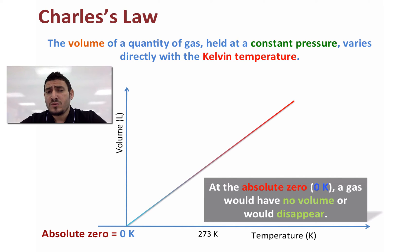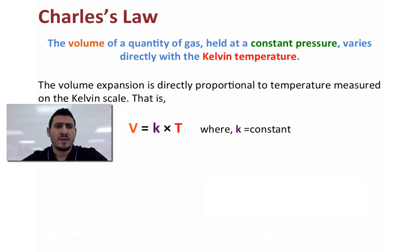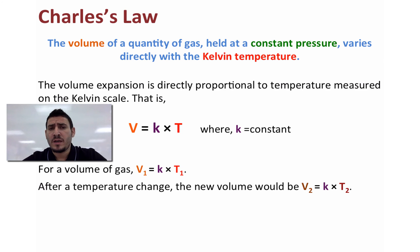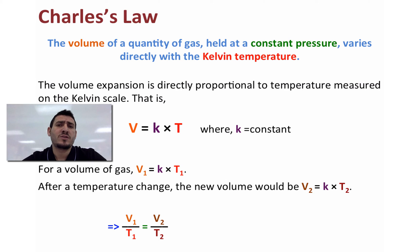At absolute zero, a gas would have no volume. Charles said volume expansion is directly proportional to temperature measured in Kelvin, so volume equals K times T, where K is a constant that accounts for pressure and amount of gas. For a gas at volume V1 and temperature T1, if temperature changes to T2, we use V1 over T1 equals V2 over T2, so V2 equals V1 divided by T1 multiplied by T2.